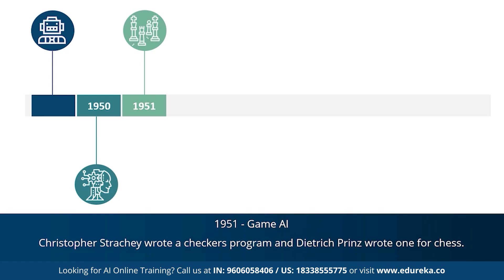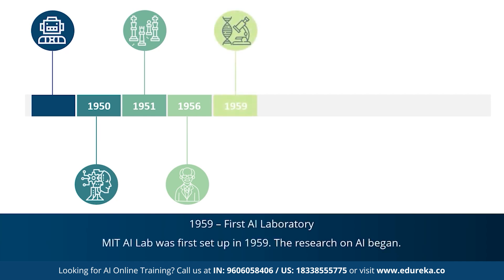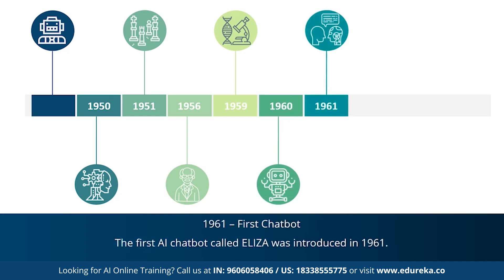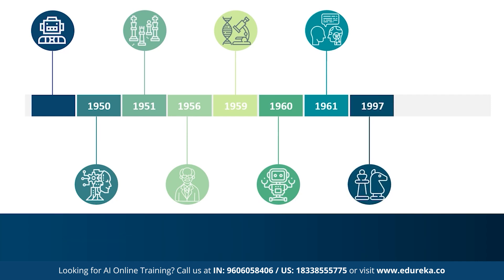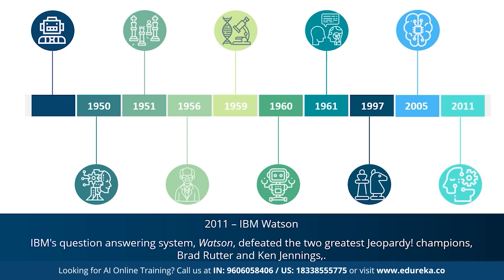Those programs were later rewritten in a better way. 1956 marked the most important year for AI, when John McCarthy first coined the term 'artificial intelligence.' This was followed by the first AI laboratory, the MIT AI lab, set up in 1959, dedicated to AI research. In 1960, the first robot was introduced to the General Motors assembly line. In 1961, the first AI chatbot called Eliza was introduced. In 1997, IBM's Deep Blue beat world champion Garry Kasparov in chess. 2005 saw an autonomous robotic car called Stanley win the DARPA Grand Challenge. In 2011, IBM's Watson defeated Jeopardy champions Brad Rutter and Ken Jennings.